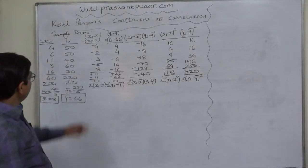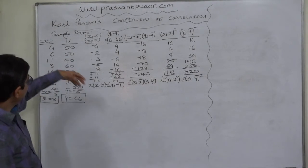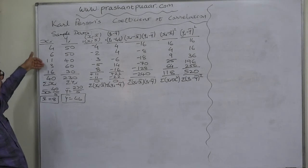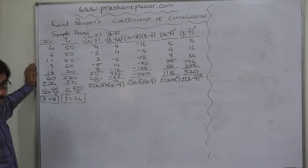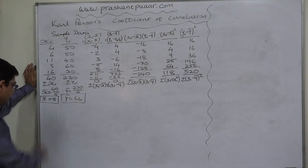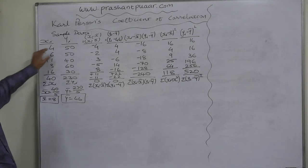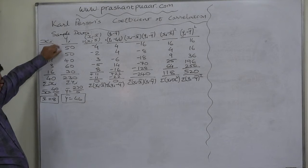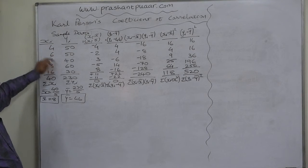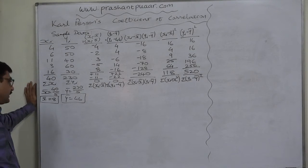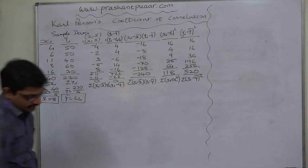We have a sample data of x and y like this. X takes values 4, 6, 11, 3, 16 — summation is 40 and x-bar (mean) is 8. The variable y takes values 50, 50, 40, 60, 30 — summation is 230 and y-bar (mean) is 46.